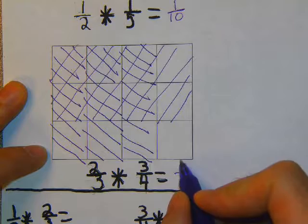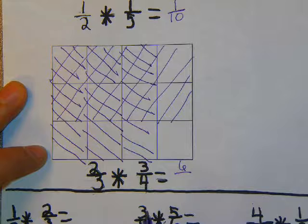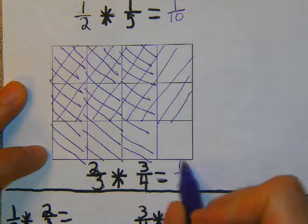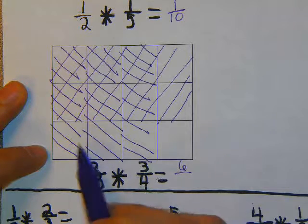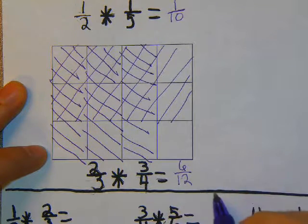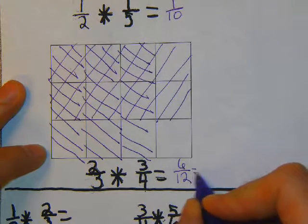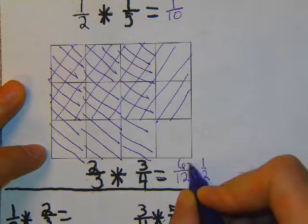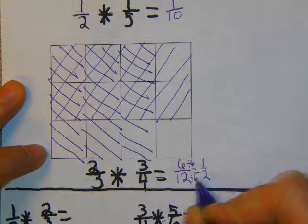So my 6 goes on top as the numerator. I have a total of 12 boxes. So that becomes 6 twelfths, which we all know can be reduced to 1 half by dividing by 6.